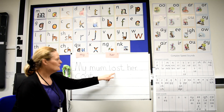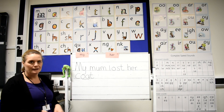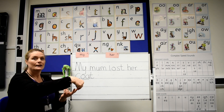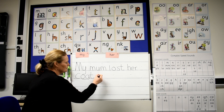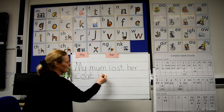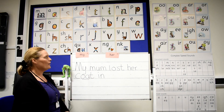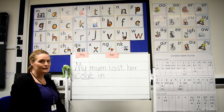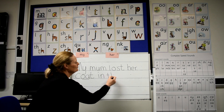My mum lost her coat. In — Fred fingers. In. Show me your Fred fingers. Well done, two sounds. Let's pinch the sounds: I-N. Finger space. I-N. Down Nobby's net, down Nobby and over his net. And then the — we know 'the' is a red word. Can we remember how to write it? T-H-E. Well done.